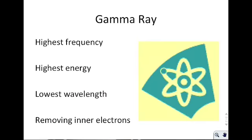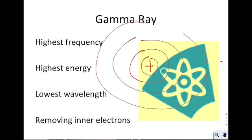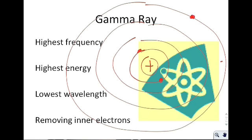Gamma rays are the highest in frequency, highest in energy, and lowest in wavelength. Gamma rays are used in science to remove inner electrons. All other radiations work on the valence electrons — the electrons on the outside layer. Gamma rays have so much energy that they can hit an inner electron and knock it all the way out of the atom, causing a cascade effect that can give you a lot of information.